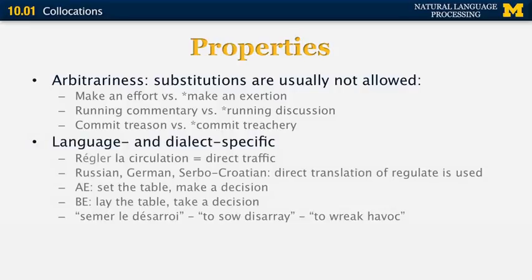Collocations are language and dialect specific. If we go from one language to another, collocations don't necessarily get translated by translating the individual words. For example, in French, to say to direct traffic, you say régler la circulation, which means regulate traffic. In Russian, German, or Serbo-Croatian, it's also the word regulate that is used. In American English, people say to set the table or to make a decision, whereas in British English, people say mostly to lay the table and to take a decision.